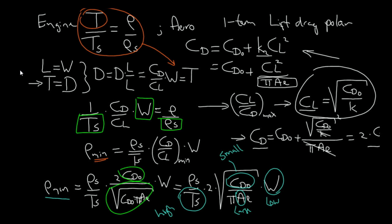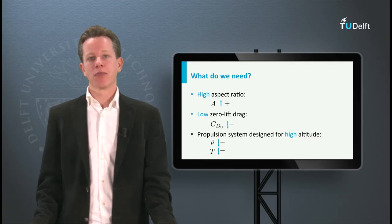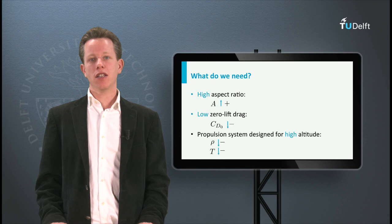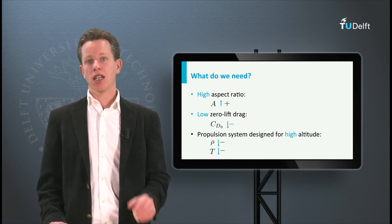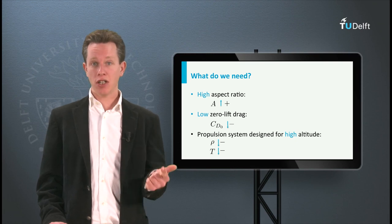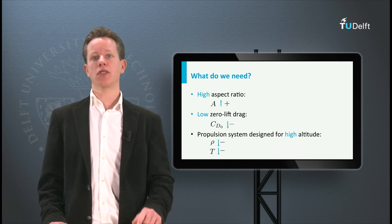This basically concludes the derivation I would like to do about calculating the maximum altitude of an aircraft. Concluding, it is possible to determine the maximum altitude of an aircraft if the lift drag polar is known and the engine characteristics as a function of altitude.